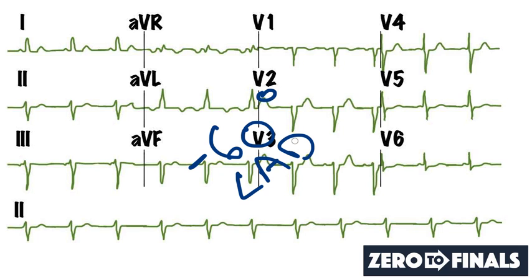Hopefully that clarifies the axis on ECGs a little bit more. If you'd like more videos like this, you can like and subscribe on YouTube. For more information on ECG axis and what causes right or left axis deviation, head over to zerotofinals.com for notes, diagrams, and more videos. Thanks for listening, I hope you enjoyed the video, and see you next time.